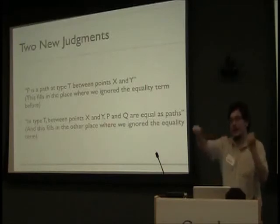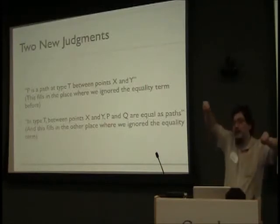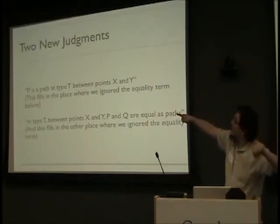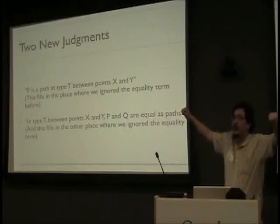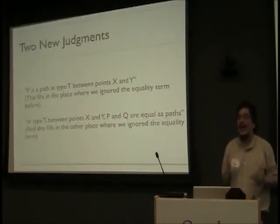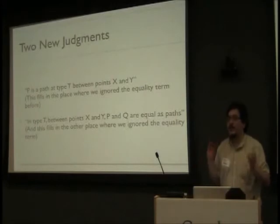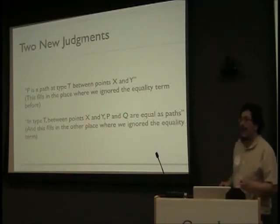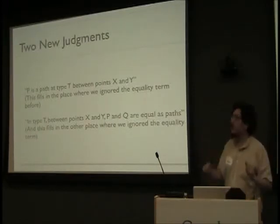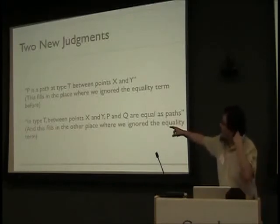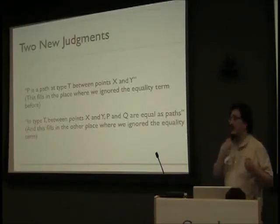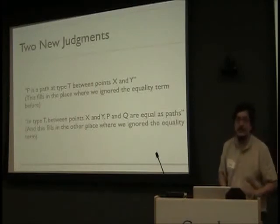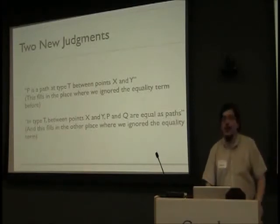By equality I'm saying 'path' here, because we can think of these things as being connected — they're not exactly the same anymore, but they lie on a path together. This equality type is a path between two points X and Y. So we add a new judgment 'is-path': is P a path between X and Y of type A? And another new judgment: in type T, between points X and Y, P and Q are equal as paths. That's the other place we just said paths were always equal or never equal. Instead, we're going to have a judgment on path equality that says there exists a homotopy between these paths.